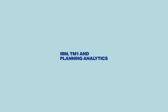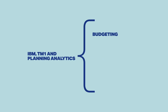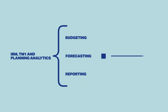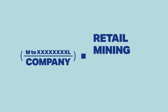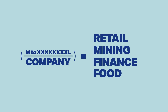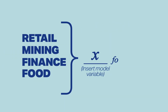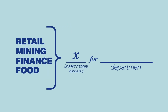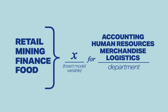You can use IBM TM1 and Planning Analytics for budgeting, forecasting, and reporting. It is used by medium to large companies across industries like retail, mining, finance, and food. And within these industries, models can be built for departments like accounting, human resources, merchandise, and logistics.